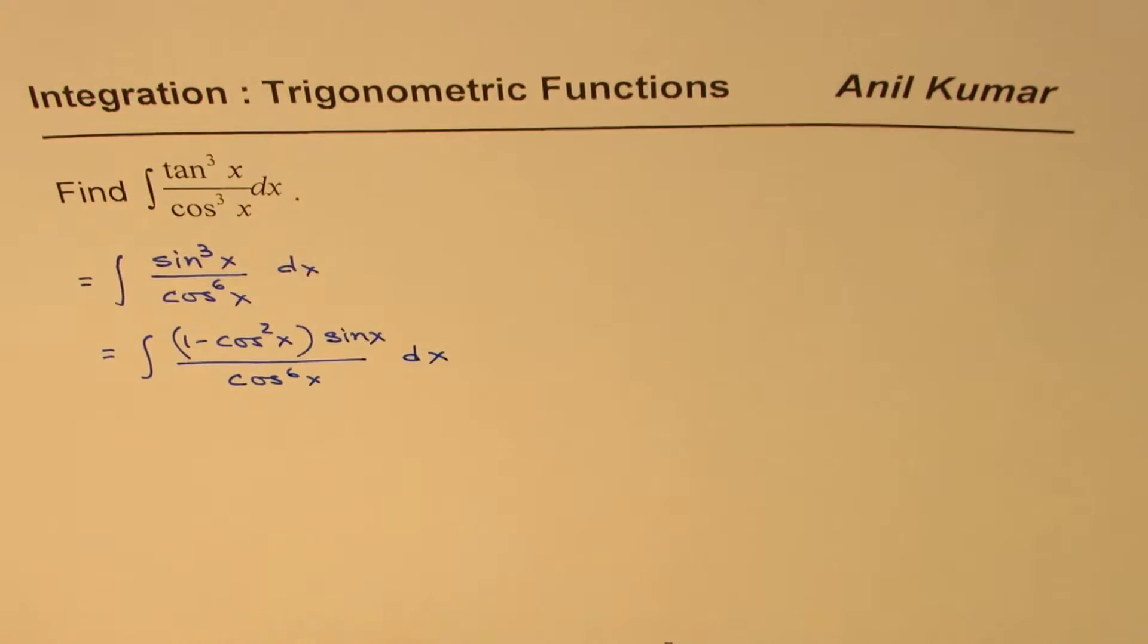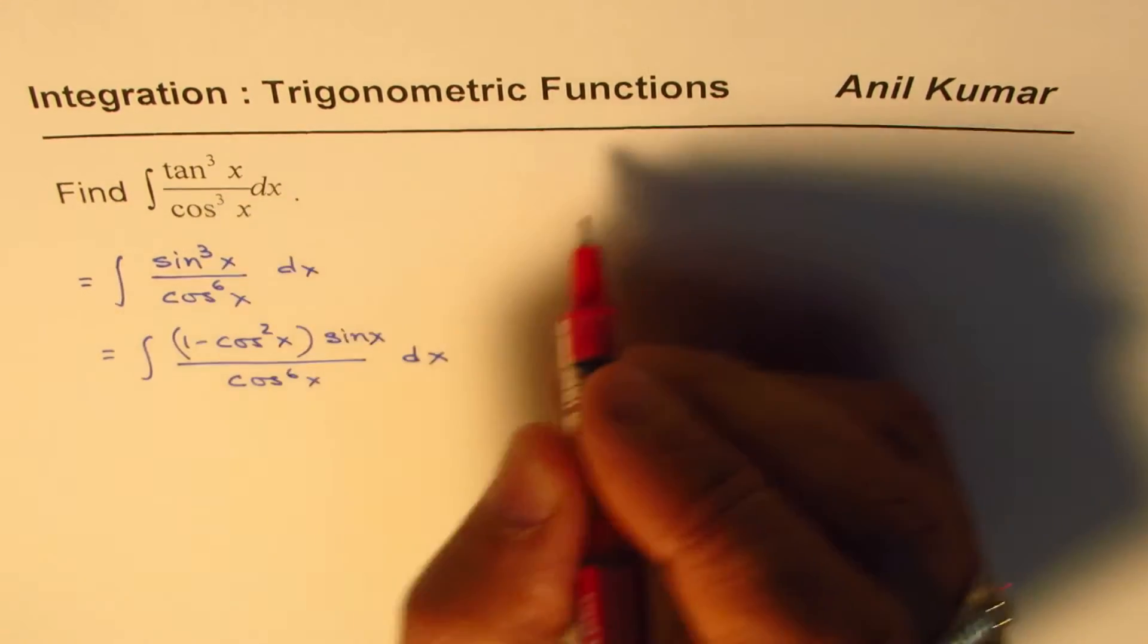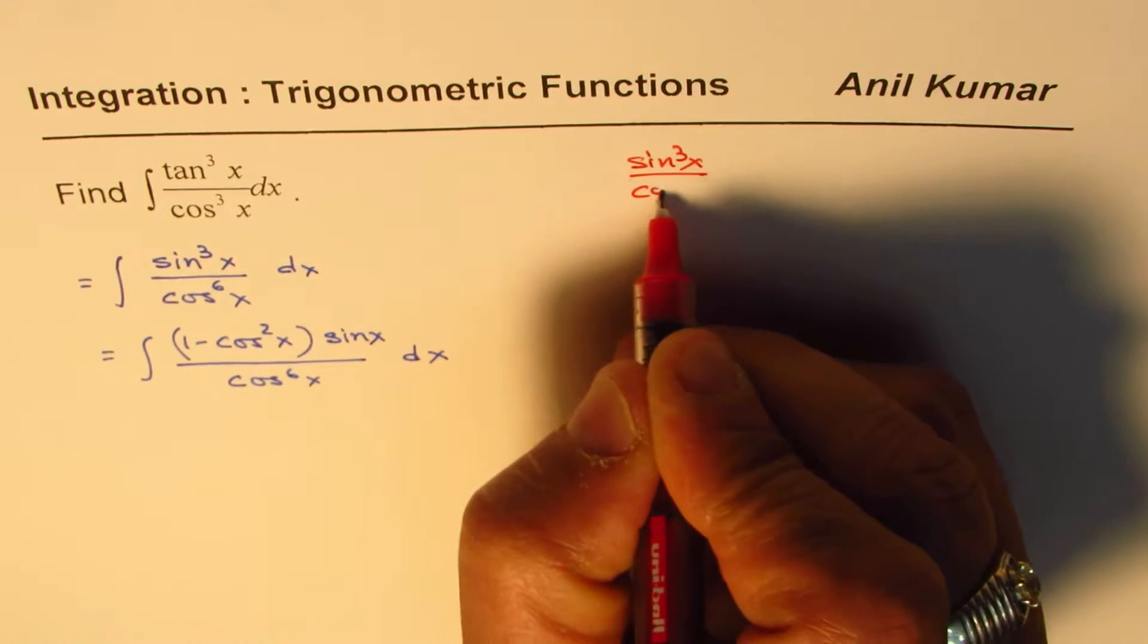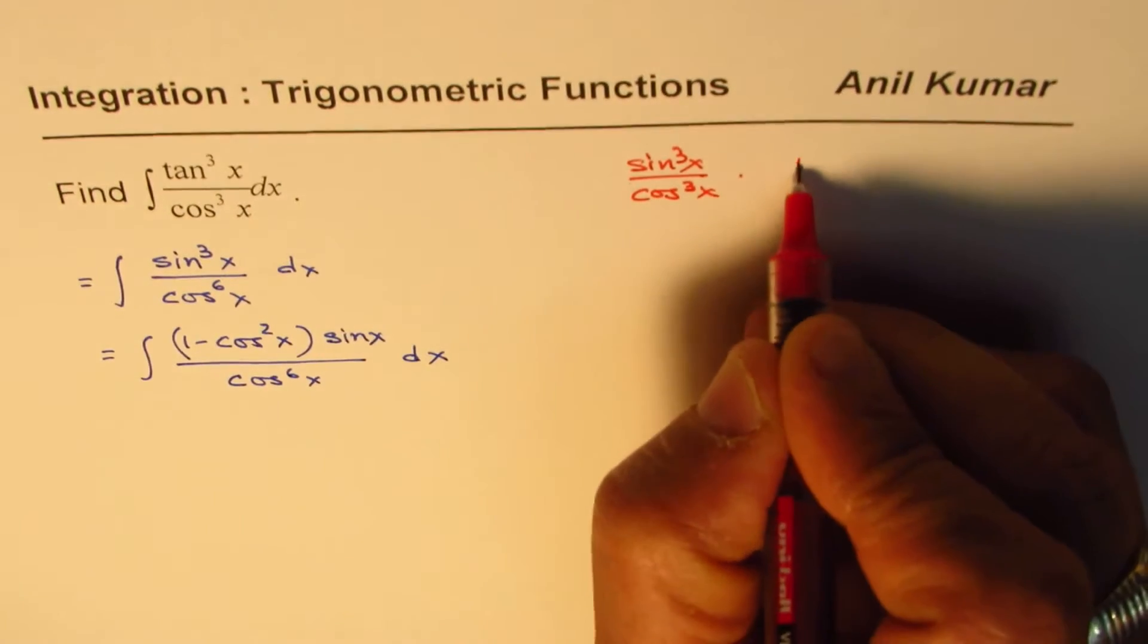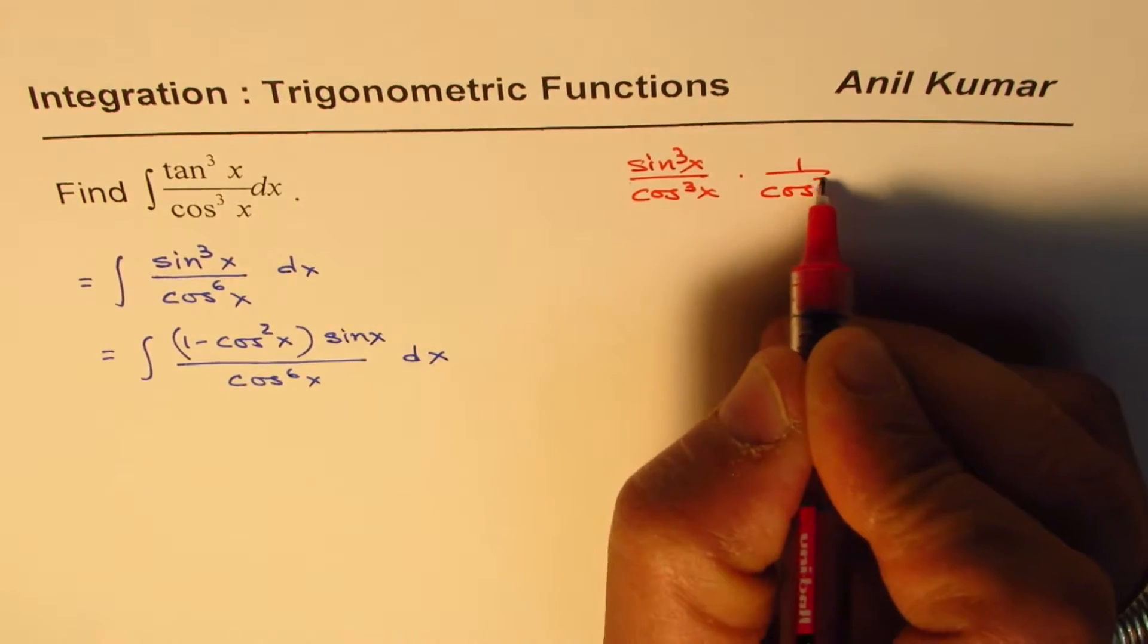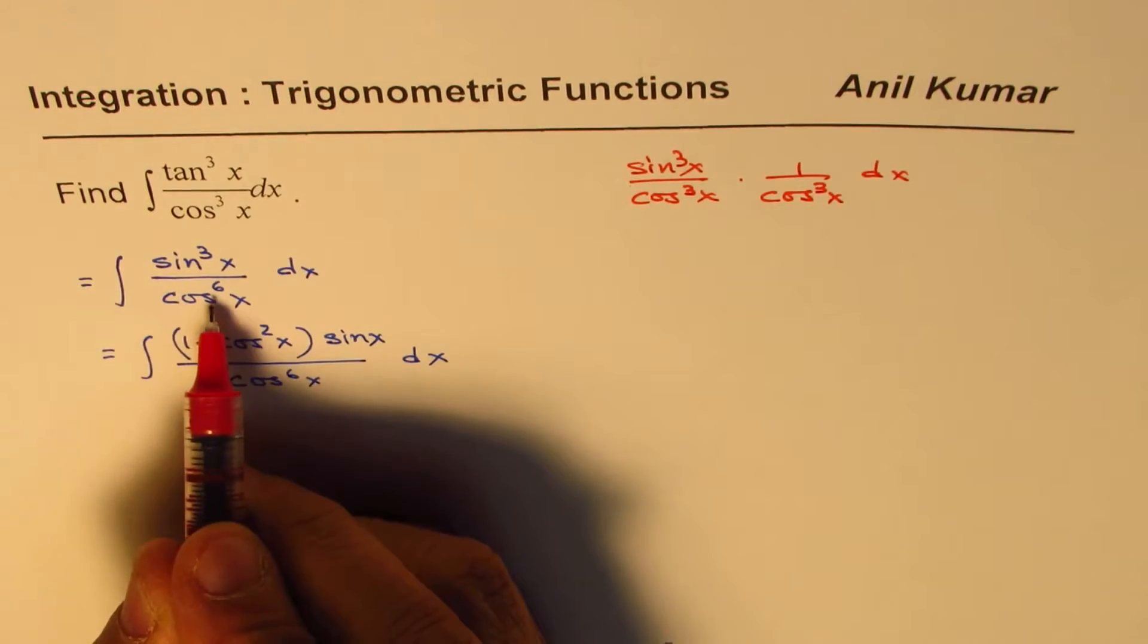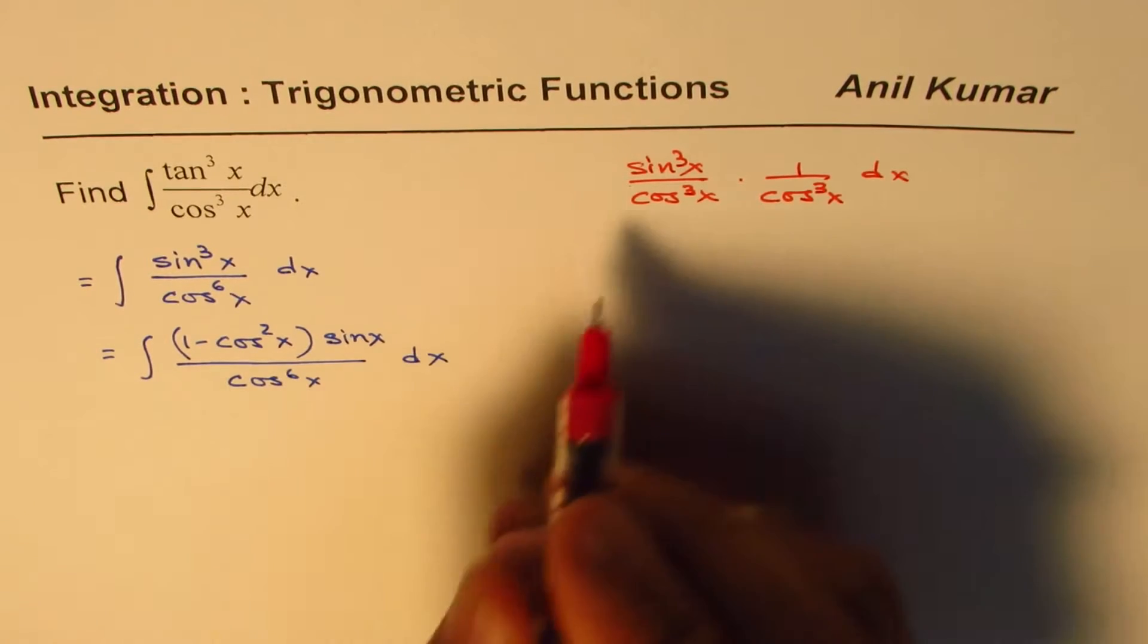So in the first step, let me show you what I did. We wrote tan as sine cube x over cos cube x, and there was already 1 over cos cube x, right? dx. So that made cos 6x.